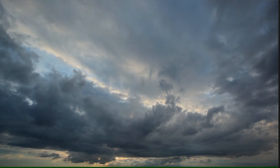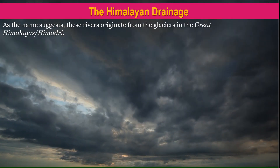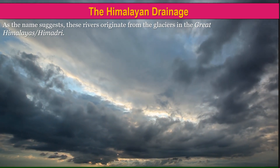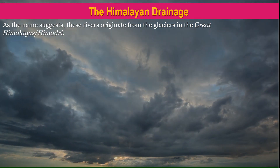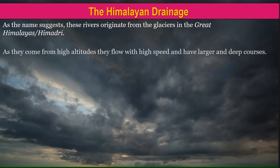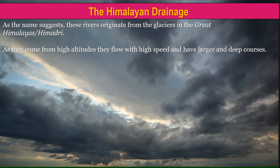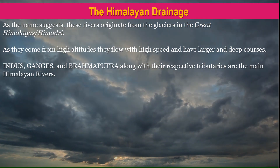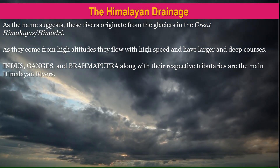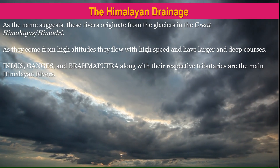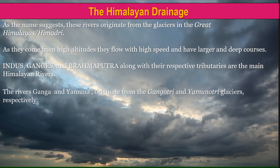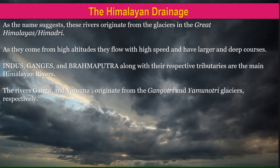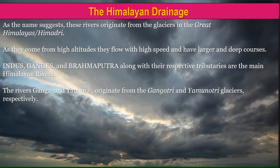Let's start with the Himalayan drainage. As the name suggests, these rivers originate from the glaciers in the Great Himalayas or Himadri — glaciers being ice rivers. As they come from high altitudes, they flow with high speed and have large and deep courses. Indus, Ganges and Brahmaputra along with their tributaries are the main Himalayan rivers. The rivers Ganga and Yamuna originate from the Gangotri and Yamunotri glaciers respectively.